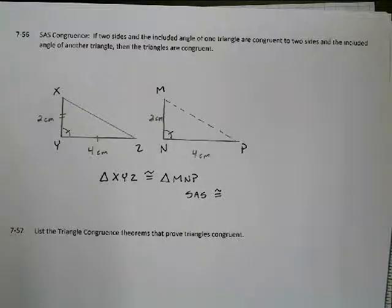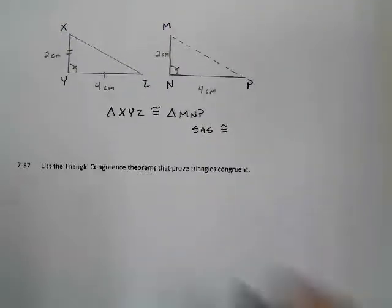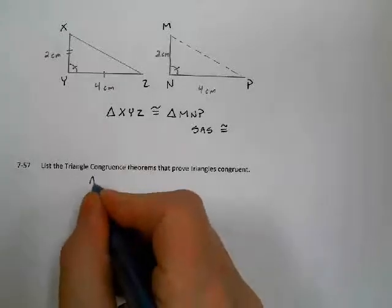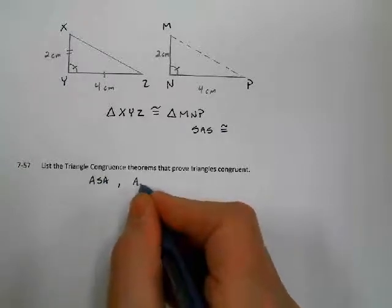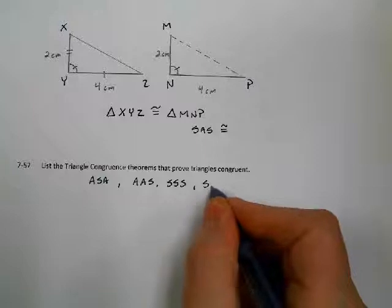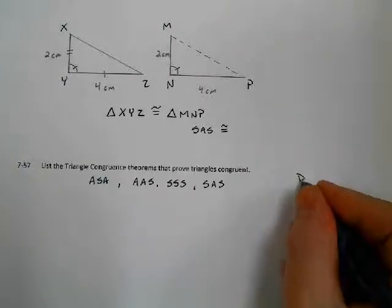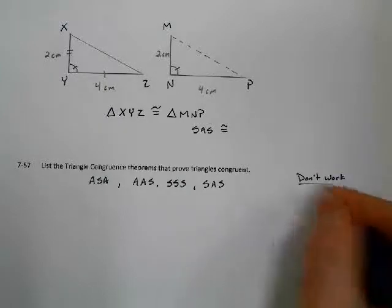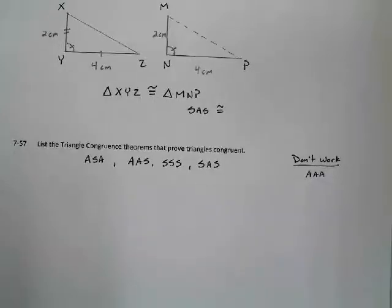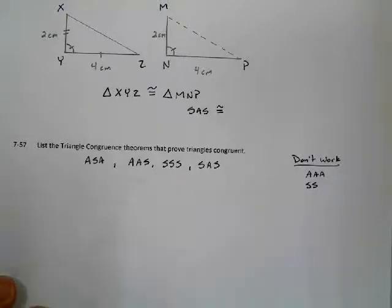So we've got our triangle congruence theorems. So far we have: Angle-Side-Angle, Angle-Angle-Side, and today we added Side-Side-Side and Side-Angle-Side. So we've got four congruence theorems that work. The ones that don't work: Angle-Angle-Angle just makes similar triangles, not congruent triangles. Side-Side doesn't work — just two sides is not enough, you have to have three. And Side-Side-Angle doesn't work; if you write it backwards, you get a donkey, and donkeys don't work either.